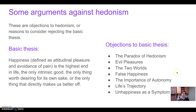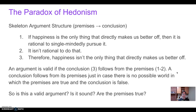Here are some objections to that basic thesis. I've put them in bullet points — there are seven of them in the chapter: the paradox of hedonism, evil pleasures, the two worlds, false happiness, the importance of autonomy, life's trajectory, and finally unhappiness as a symptom of harm. Let's start with the first one.